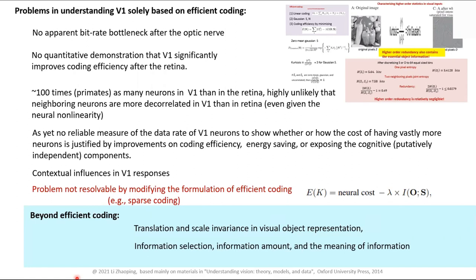Information is not just amount — it has meaning. For instance, if I tell you 3.14159, from a Shannon information standpoint each digit costs the same amount of information. But obviously the first digit '3' is more important. There's something about importance and meaning beyond information amount. Somewhere we have to select — if we cannot afford to do all these codings, information selection and the meaning of information may matter.